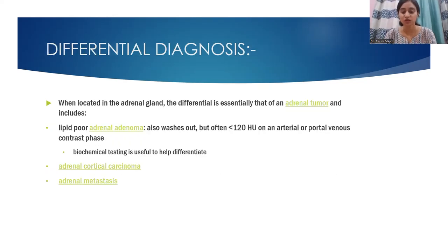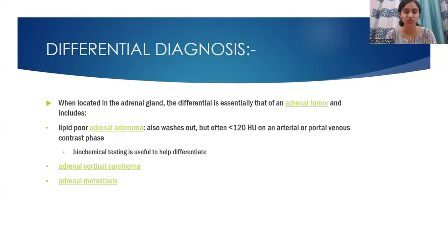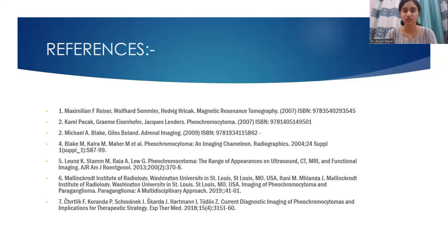Differential diagnoses when located in the adrenal gland: The differential is essentially that of an adrenal tumor, which includes lipid-poor adrenal adenoma — which also washes out but often less than 120 HU on arterial or portal venous contrast phase. Biochemical testing is useful to help differentiate adrenal cortical carcinoma and adrenal metastasis. These are my references.